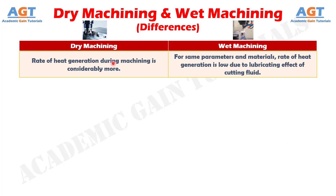Number 6: In dry machining, the rate of heat generation during machining is considerably more, whereas in wet machining, for the same parameters and materials, the rate of heat generation is low due to the lubricating effect of cutting fluid.